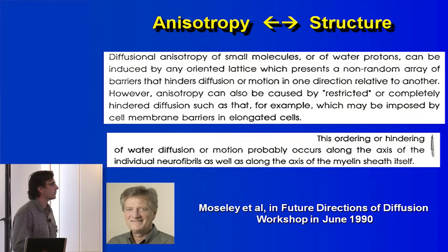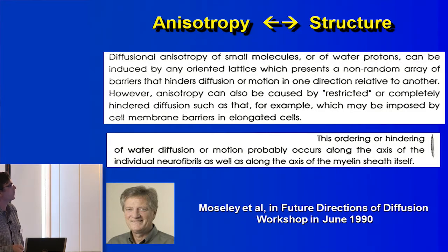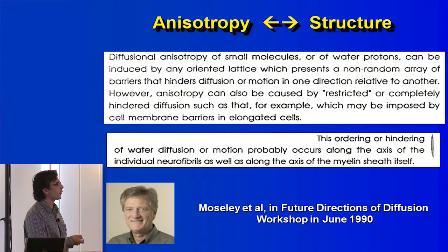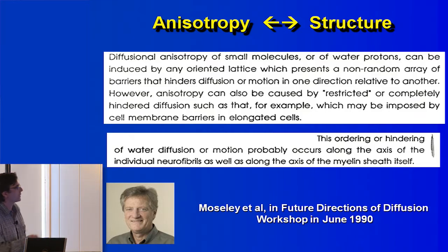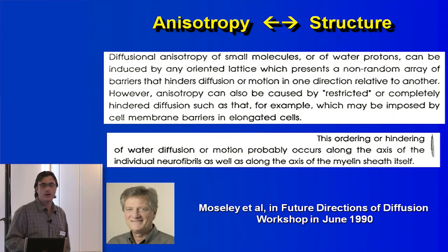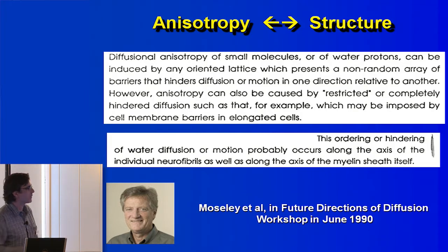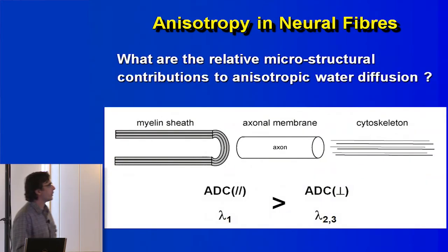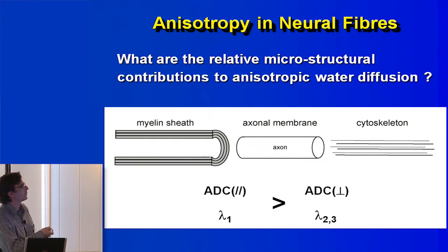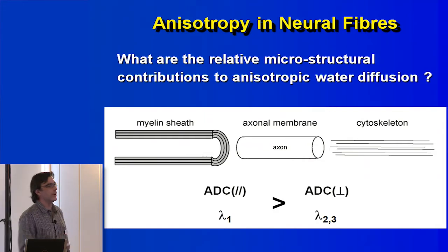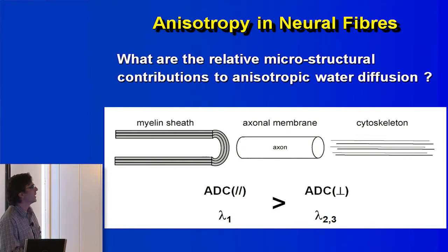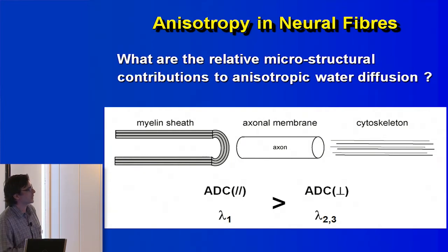My post-doctoral supervisor back in 1995 was really central to this field. The idea of diffusion anisotropy came out of a June 1990 workshop, and he understood that water diffusion anisotropy was linked to the underlying tissue microstructure. I actually started doing diffusion work in September 1990, right after this. The relative microstructural contributions include myelin sheaths, axonal membranes, and cytoskeletons. Research has tried to tease out those contributions, and it turns out axonal membranes or membrane density seem to be most important, while myelin sheaths can modulate things.